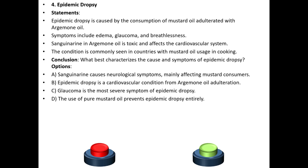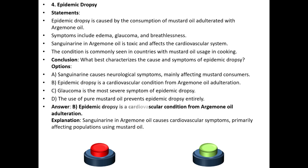Conclusion: Which characterizes the cause and symptoms of epidemic dropsy? Option A: Sanguinarine causes neurological symptoms mainly affecting mustard consumers. Option B: Epidemic dropsy is a cardiovascular condition from argemone oil adulteration. Option C: Glaucoma is the most severe symptom of epidemic dropsy. Option D: The use of pure mustard oil prevents epidemic dropsy entirely. The answer is B: Epidemic dropsy is a cardiovascular condition from argemone oil adulteration.